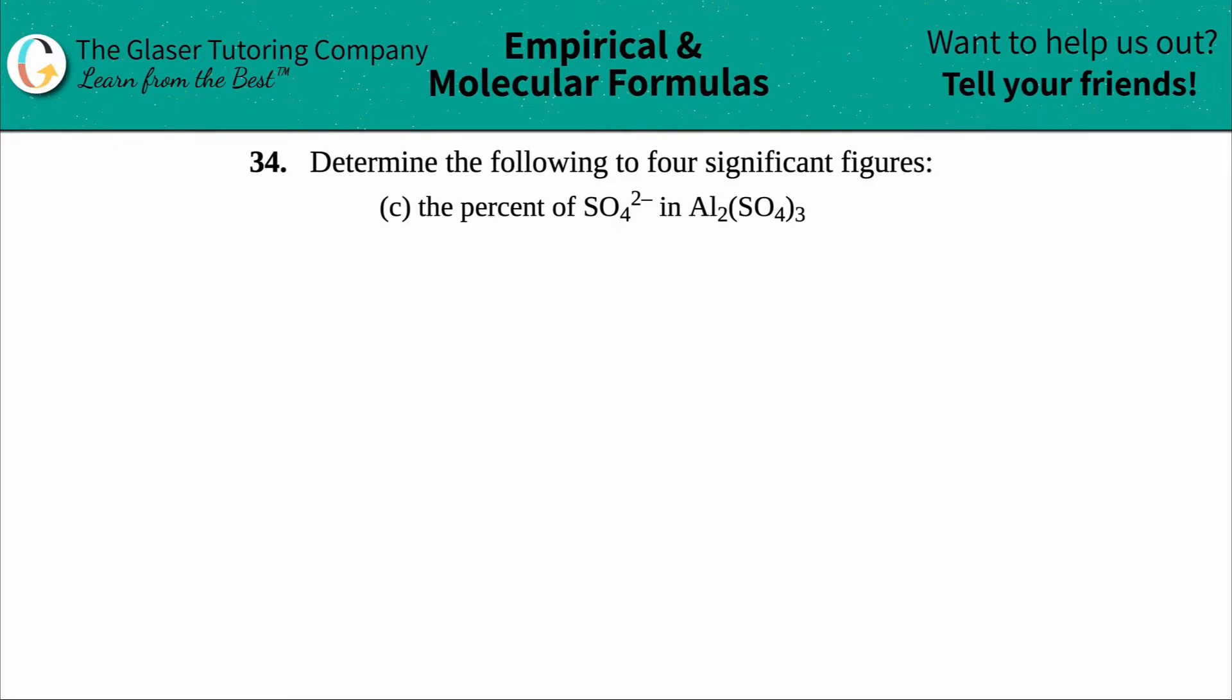Number 34, determine the following to four significant figures. Letter C: we need to find the percent of SO4²⁻, which is sulfate, in aluminum sulfate, Al₂(SO₄)₃.